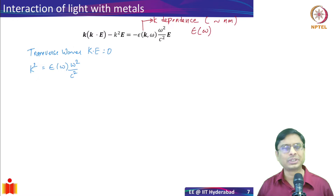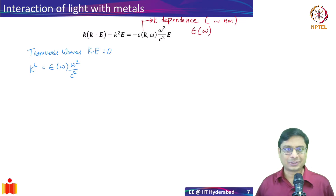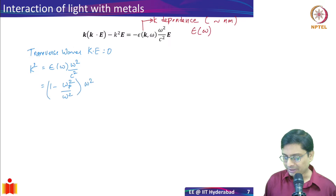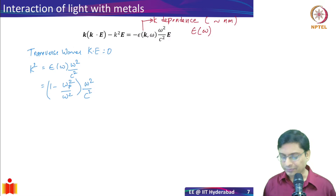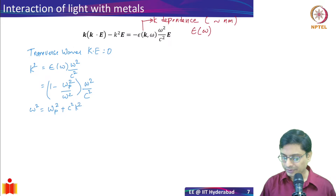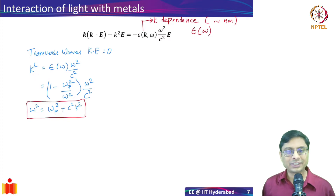Any electromagnetic radiation we are talking about involves transverse waves where the electric field is perpendicular. Plasmonics is the science of interaction of light with metals, and we know the metal's dispersion relation is given by 1 minus omega_p squared over omega squared, times omega squared over c squared equals k squared. Rearranging quickly, you get omega squared equals omega_p squared plus c squared k squared.